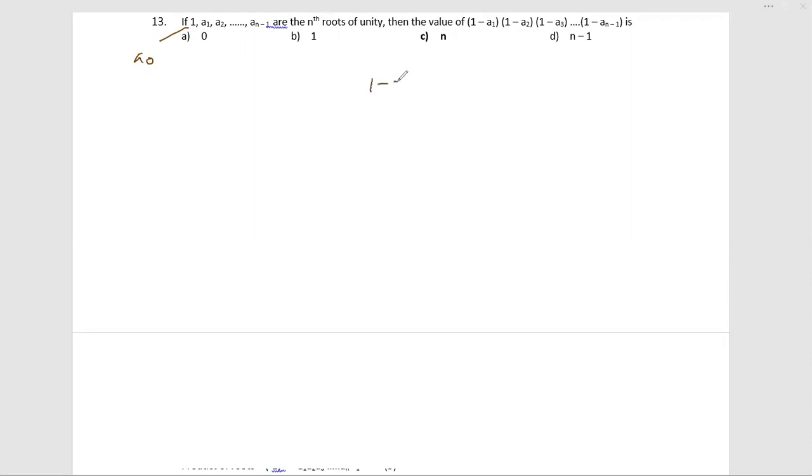If I just take one expression, 1 minus a0, that is 1 minus 1, that is 0. So the value comes as 0 when n is 0.